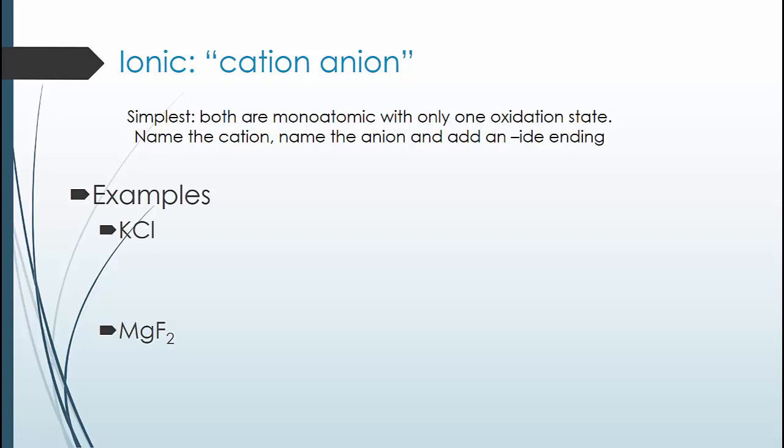Let's start with the simplest. If both the anion and the cation are monoatomic ions, then you just need to name the first element, then name the second element, and then add an IDE to the end. For each of these, take a moment and see if you can get the name before I say it. Pause the video and write these down, and then hit play when you're ready.